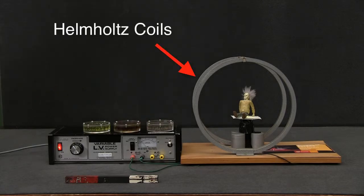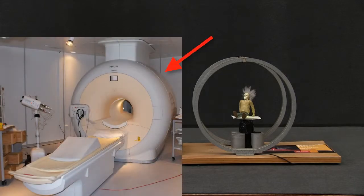Then I have the Helmholtz coils which is powered by the power source. The Helmholtz coils represent the doughnut-shaped apparatus of a magnetic resonance imager.